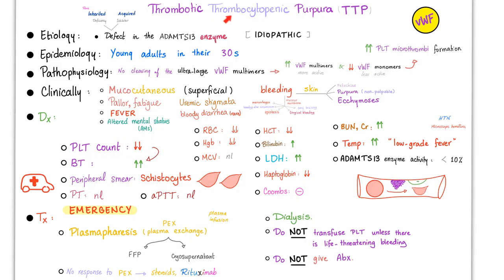Diagnosis of TTP: platelet count is low — thrombocytopenia. Bleeding time is high. Peripheral smear shows schistocytes — helmet cells, fragmented cells. PT and PTT are normal because secondary hemostasis is normal. Red blood cells, hemoglobin, and hematocrit are all low because of anemia. MCV is normal — normocytic anemia. Bilirubin is high, LDH is high, haptoglobin is low. Coombs is negative — non-immune destruction. Creatinine could be high if there is acute renal failure. Temperature is high — low-grade fever, one of the pentad. We can measure ADAMTS13 enzyme activity — it's usually less than 10% of normal. But remember: TTP is a medical emergency — do not delay treatment waiting for the ADAMTS13 result.